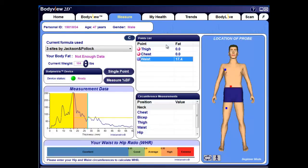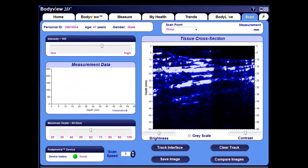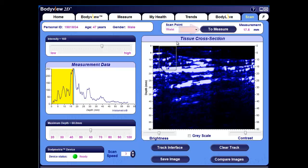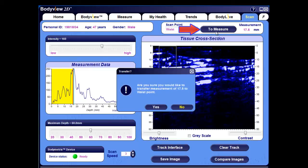Again, if we drag a rectangle from the center of the fat muscle interface to the top of the image, the total fat thickness is displayed, along with a two measure button. Clicking on this button brings up a window where you're asked if you would like to transfer the measurement to the waist point. Select yes, and if we navigate back to the measure tab, you can see that the measurement was transferred.